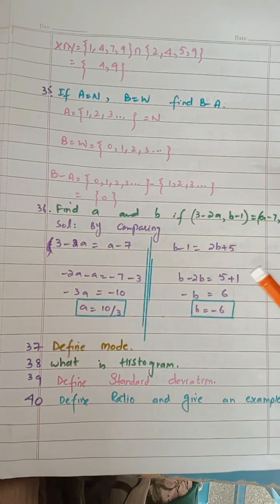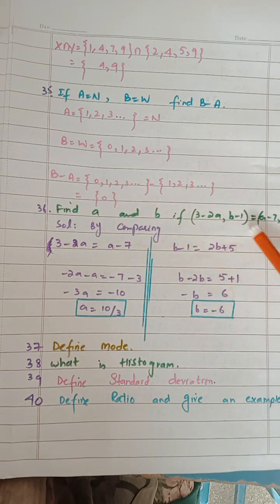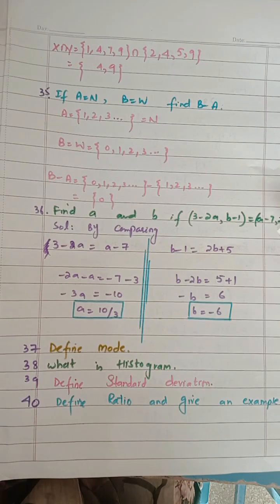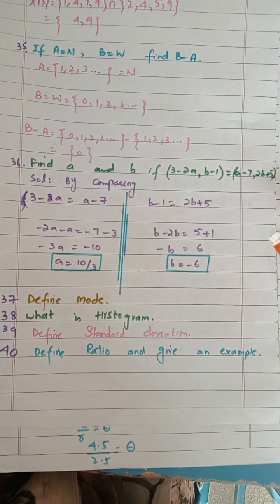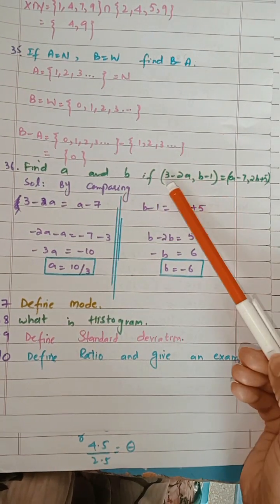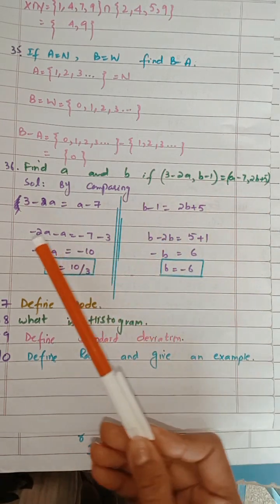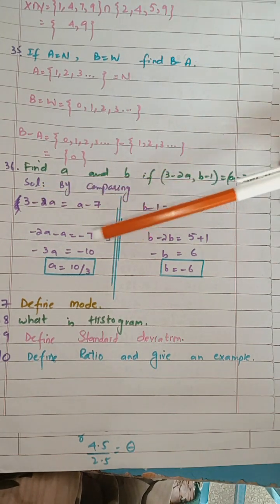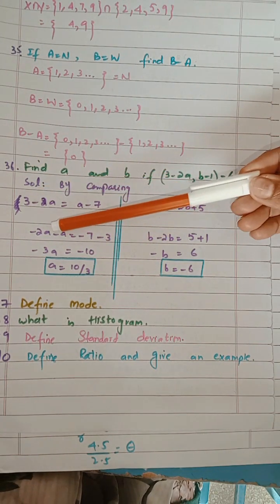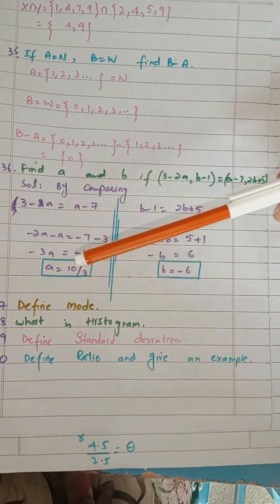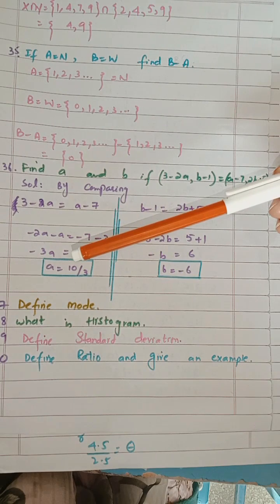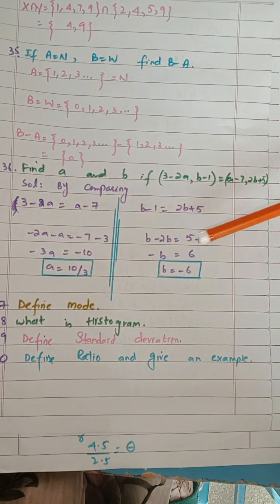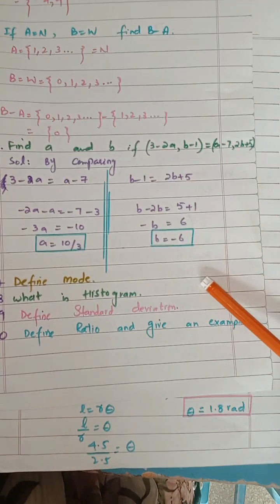Next, question from section 5.3: find A and B if this ordered pair is equal to this. You have to find the values of A and B. Since both are equal in order, by comparing: the first number is equal, the second number is equal. You can see minus 2 as it is; A plus here it will be minus — minus 7 as it is. 3 plus minus equals minus 10. Minus 10 and 2 plus 1 is 3. Minus on both sides cancels. Then 2B plus minus 1, minus: 5 plus 1 is 6. Shift here and the B value is also obtained.